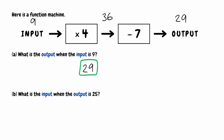For part B, we have to figure out the input when we're told that the output is 25. When using a function machine where we're given the output, and we're working from right to left, we have to do the opposite operations. So we're starting with an output of 25. Instead of doing subtract 7, we do the opposite and add 7. So 25 plus 7 gives us 32. Then, instead of doing multiply by 4, we do the opposite and divide by 4. So 32 divided by 4 gives us an input of 8.